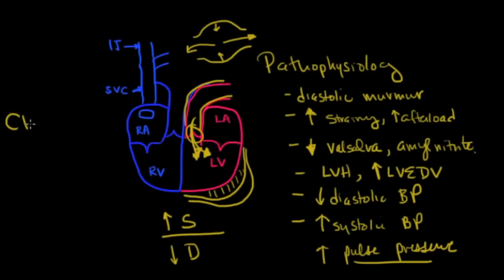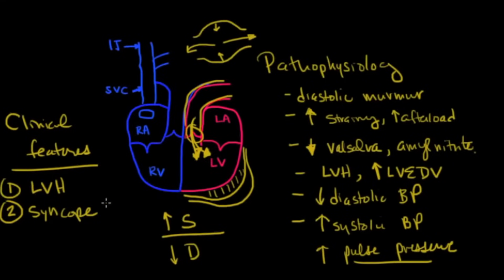So let's quickly talk about some of the clinical features that you might see. As we mentioned, you're going to see LVH, left ventricular hypertrophy, or a left ventricular end-diastolic volume which is increased. The other thing that you might see is syncope, just like we saw in aortic stenosis. However, there's a couple of reasons why you might see that here. The first is that if the diastolic pressure is so low that you can't maintain an adequate perfusion, you're going to see syncope.